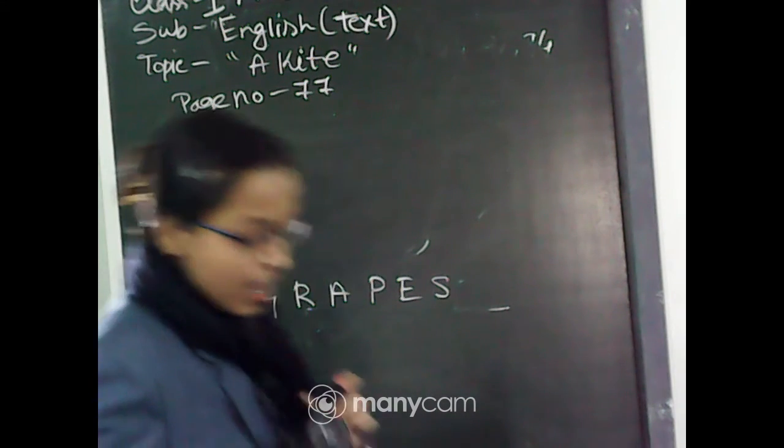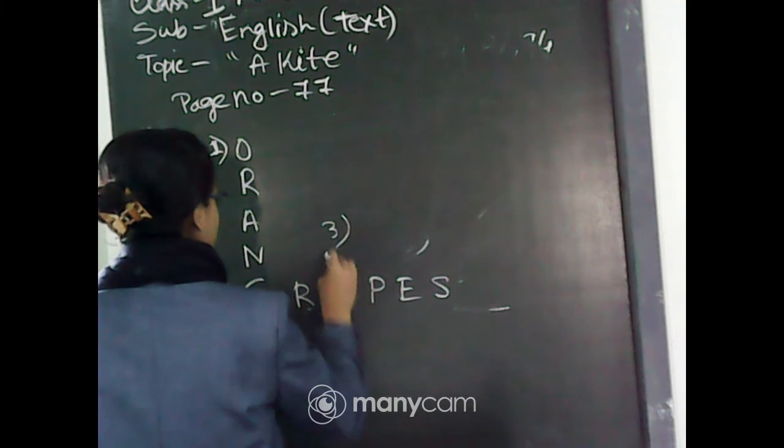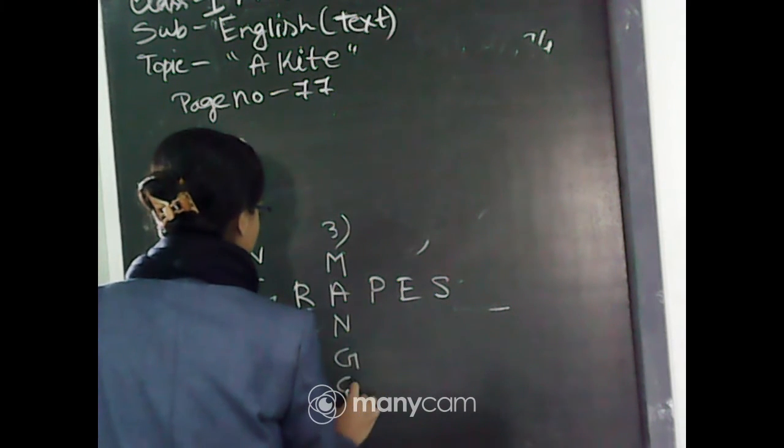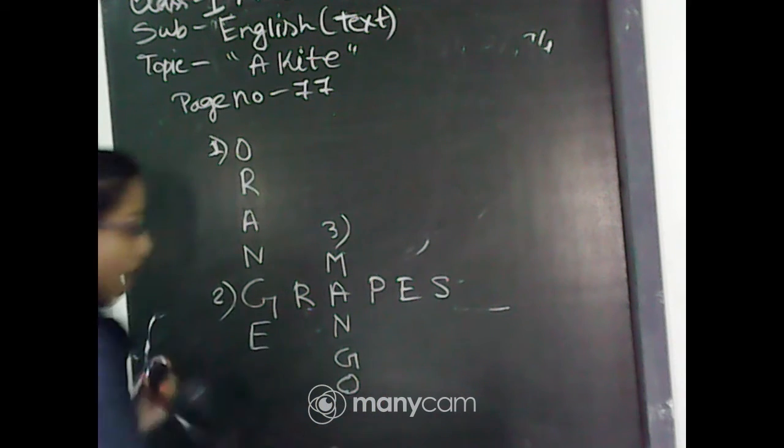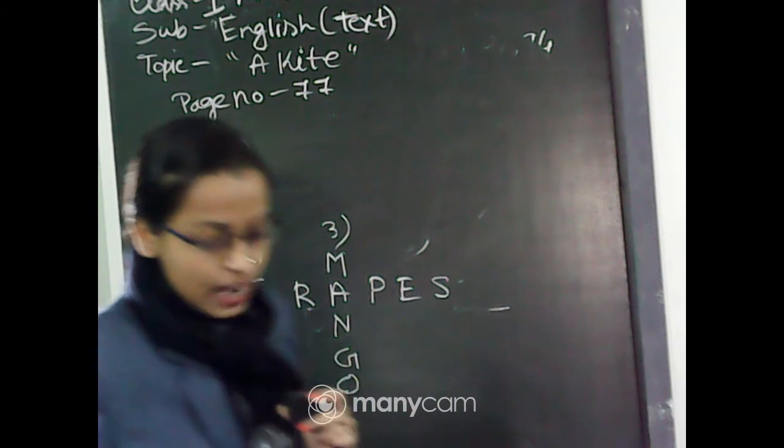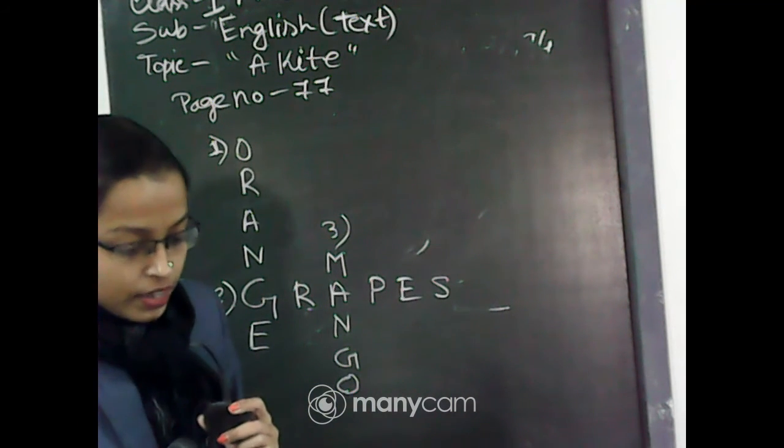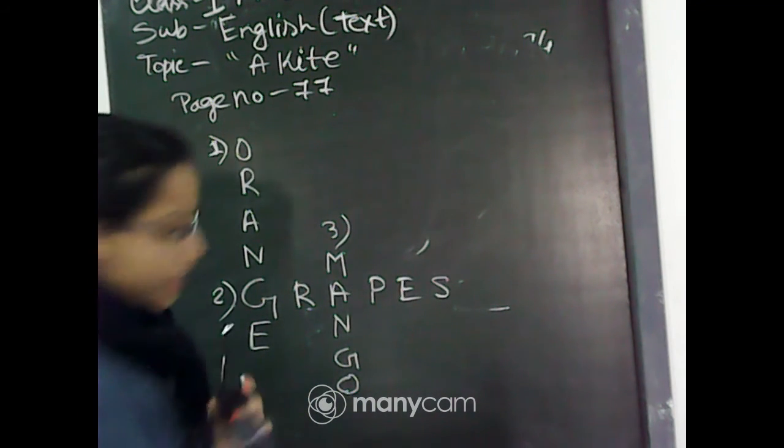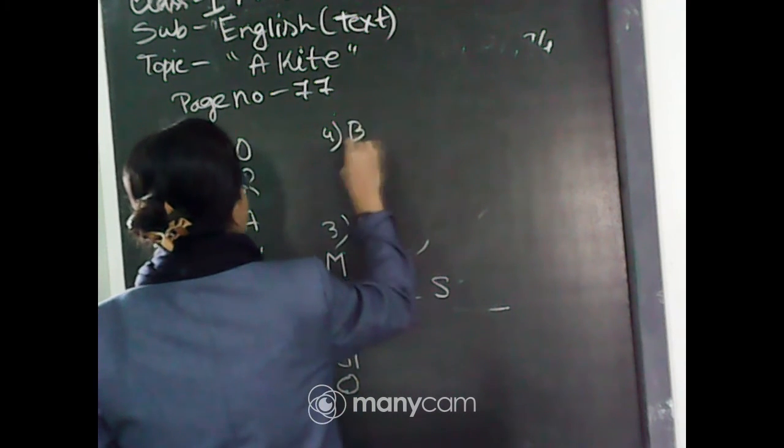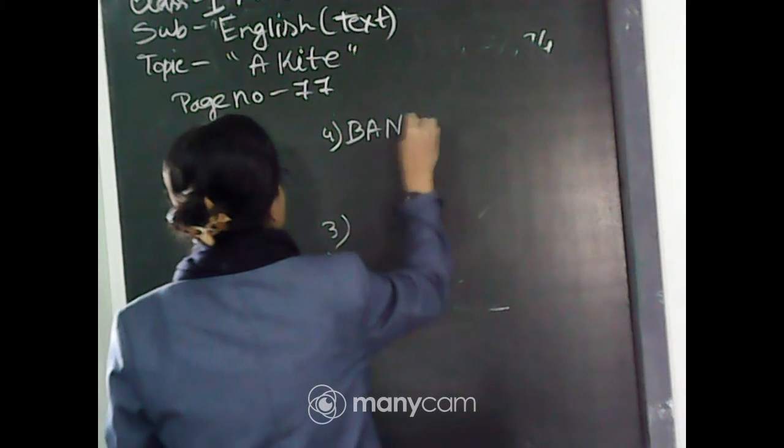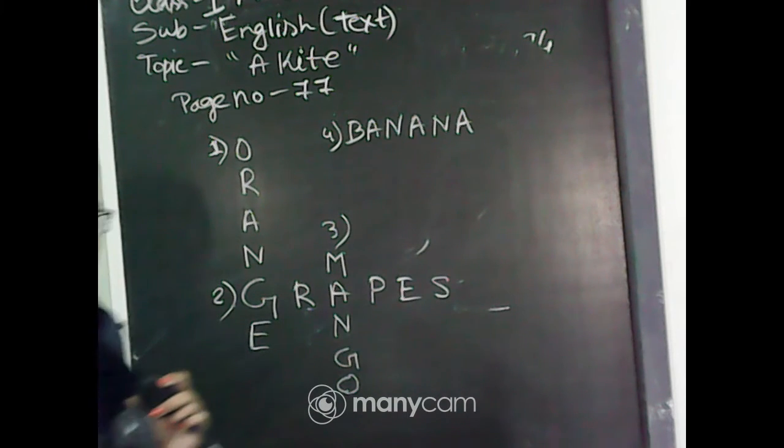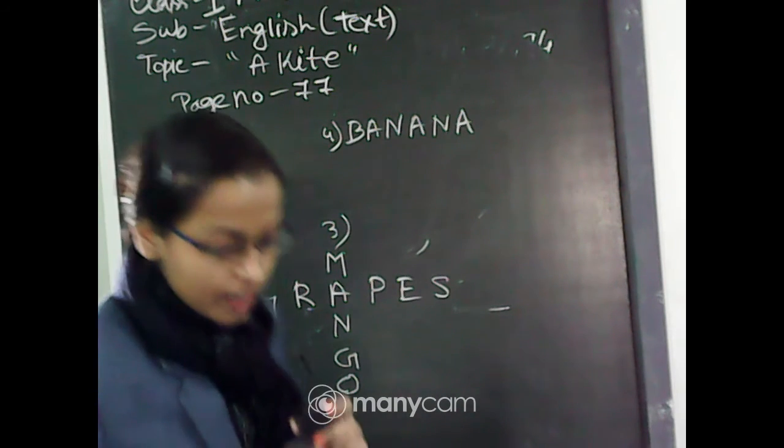Number 3 up-down will be mango: M-A-N-G-O, mango. Number 4 side-by-side will be banana: B-A-N-A-N-A, banana.